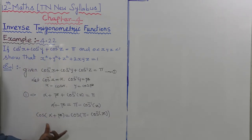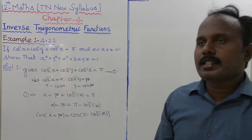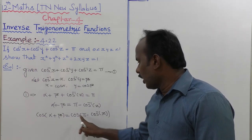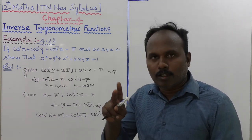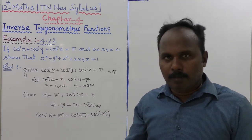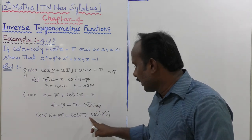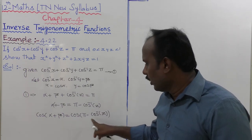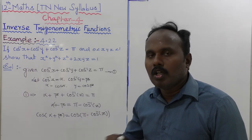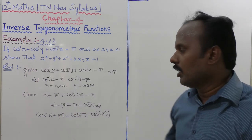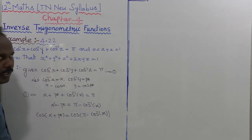Now we expand using the formula cos(a + b) = cos a · cos b − sin a · sin b. Also, cos(π − θ) is in the second quadrant, where cos is negative, so cos(π − θ) = −cos θ. Therefore cos⁻¹(z) = π − (α + β), so cos of cos⁻¹(z) = −cos(α + β).